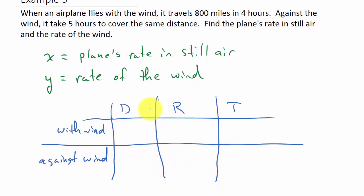So the distance that we travel is 800 miles, and that's both directions. A plane flies with the wind, it travels 800 miles. Against the wind, it covers the same distance. So the distance is 800 on both of them.